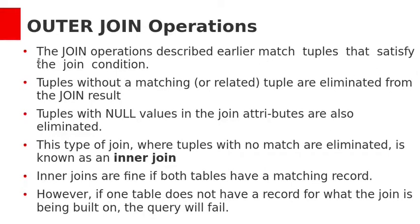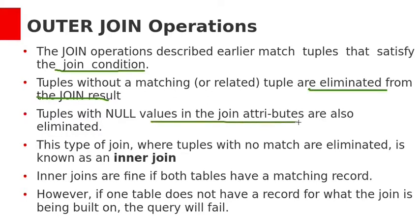We have already discussed join operations. The join operations described earlier match the tuples that satisfy the joining condition. Tuples without a matching joining condition are eliminated from the result. Tuples with null values in the join attributes are also eliminated. This type of join, where tuples with no match are eliminated, is called an inner join.